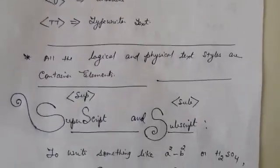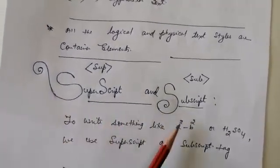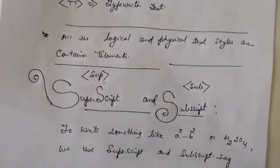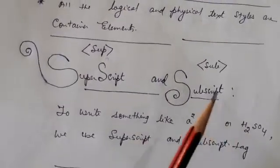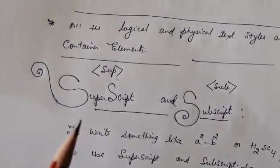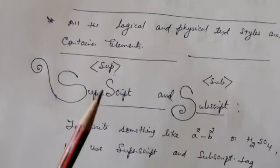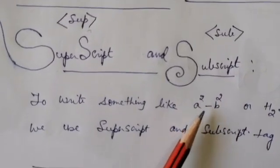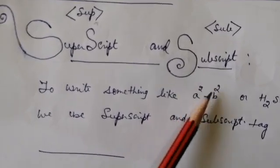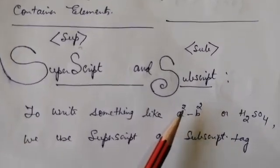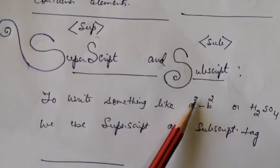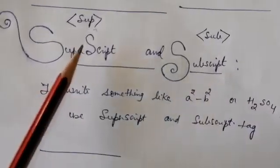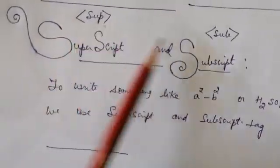Next are superscript and subscript. Superscript uses the tag <sup> and subscript uses the tag <sub>. Superscript puts the text above the content — for example, in a²−b², the 2 appears above the a and b. We use a mnemonic to remember: sup means superman, who flies in the sky, so superscript text flies up; sub means submarine, which is under the water, so subscript text goes below.